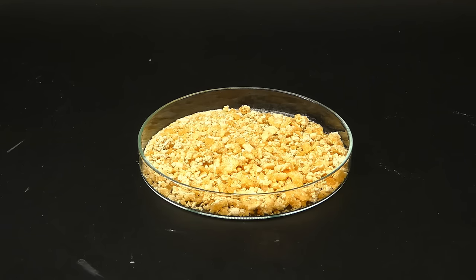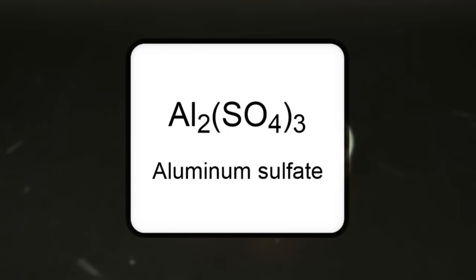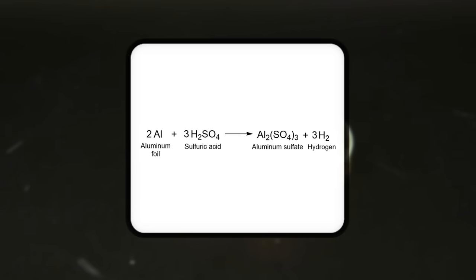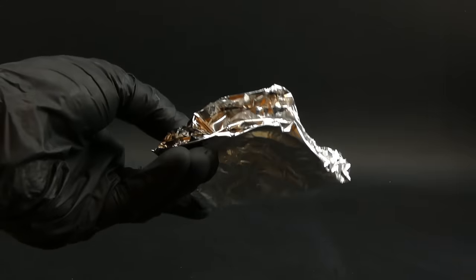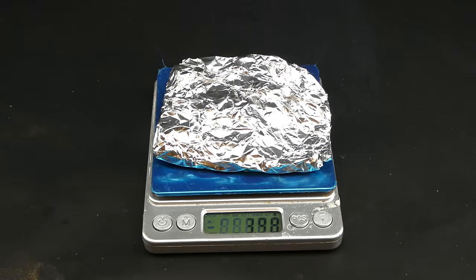It of course isn't completely pure as you can probably guess by it having this awful yellow color, but it should work alright for making the alum. And speaking of that, now with the potassium sulfate ready it is time to take care of the aluminum one. Making it is a bit tricky but similarly to the potassium sulfate it doesn't require any weird reagents. And all that I am going to need is some aluminum foil and my trusty sulfuric acid.